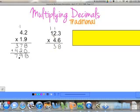And 6 times 1 is 6, plus 1 is 7. We're done with the 6. Use a 0 placeholder. 4 times 3 is 12. 4 times 2 is 8, plus 1 is 9. And 4 times 1 is 4.